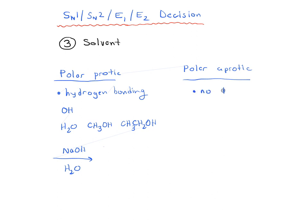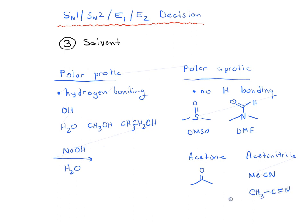And then we have polar aprotic solvents. In this case, there's no hydrogen bonding. But they are still polar. They have dipoles. So examples are things like DMSO. There's also DMF. There's acetone. There is also acetonitrile, which is abbreviated MeCN sometimes, or CH3C triple bond N. And there's also another one called HMPA. We usually don't write that one out. But that's also a polar aprotic solvent.